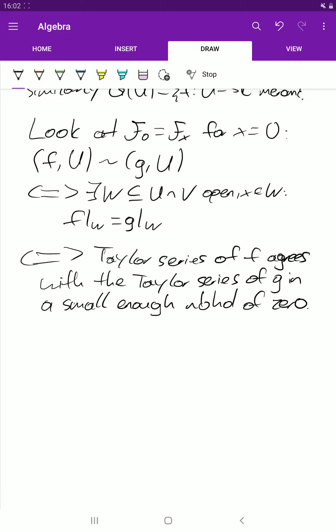And then, of course, if the functions have to be the same, then by the identity theorem, the Taylor series have to be equal. And if the Taylor series are equal in a small enough neighborhood, then we can go back and get that the functions are equal on a small enough neighborhood.